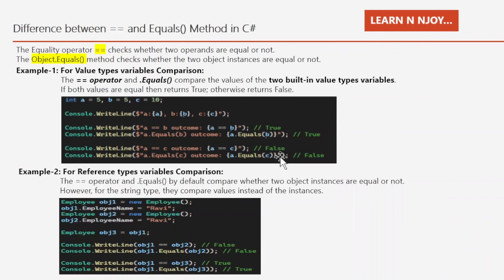So here we are going to talk about the difference between the double equal sign and the equals method in C#. The equality operator double equal sign checks whether two operands are equal or not, whereas the object dot equals method checks whether two object instances are equal or not.